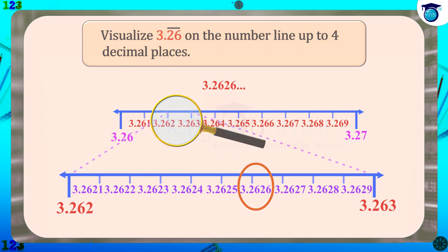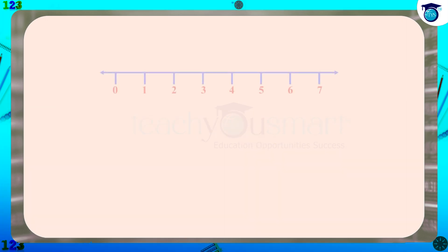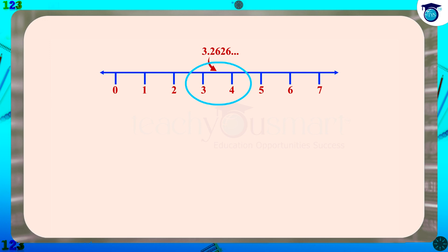Thus the visualization of 3.26 bar on the number line up to four decimal places using a magnifying glass is as follows.